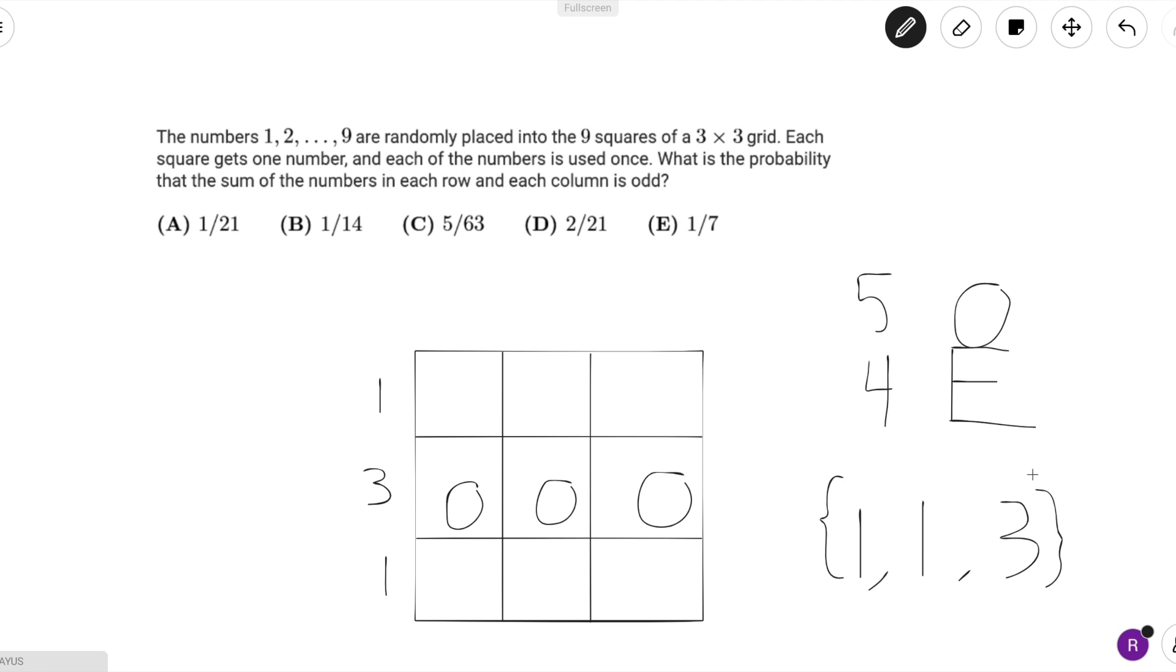The columns is just the same thing. There must be one column with three odds, and the other two columns must each have one odd. So again, let's just set this column to have three odds, this one have one, and this one have one. That means that it must go here.